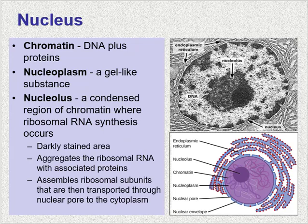Within the nuclear envelope, you'll find a gel-like substance called nucleoplasm — like the nucleus's cytoplasm. Within the nucleoplasm, you'll find chromatin or chromosomes. Typically you'll find chromatin, which is the decondensed DNA form plus proteins. When a cell is undergoing replication, you may see fully condensed chromosomes. Within the nucleus there is also a region called the nucleolus, which is a condensed region of chromatin where ribosomal RNA synthesis occurs. It aggregates ribosomal RNA with associated proteins and assembles ribosomal subunits that are then transported through the nuclear pore to the cytoplasm.